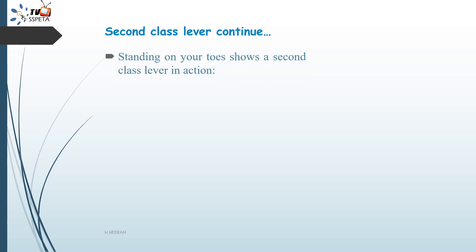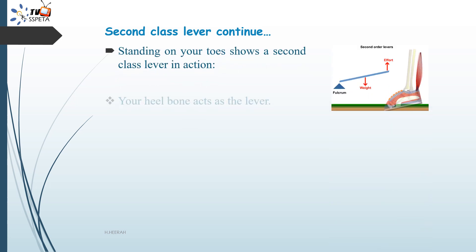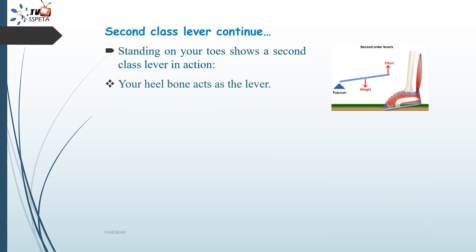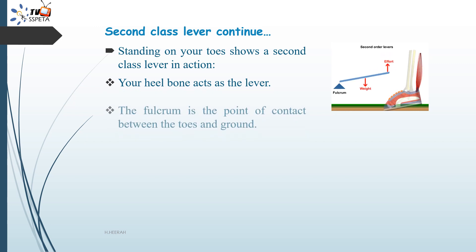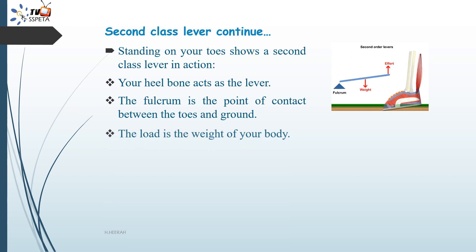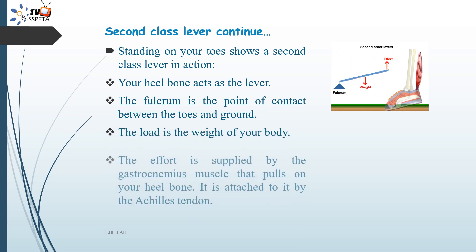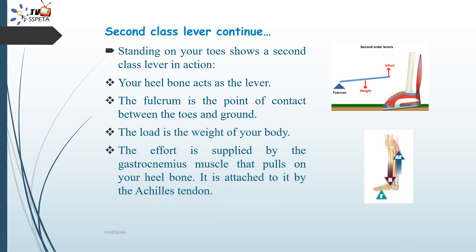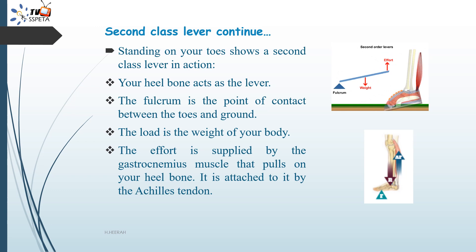Standing on your toes shows a second class lever in action. Your heel bone acts as the lever, the fulcrum is the point of contact between the toes and ground, the load is the weight of your body, and the effort is supplied by the gastrocnemius muscle that pulls on the heel bone via the Achilles tendon.